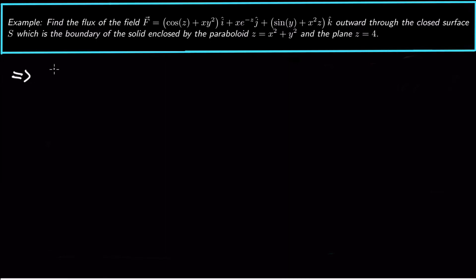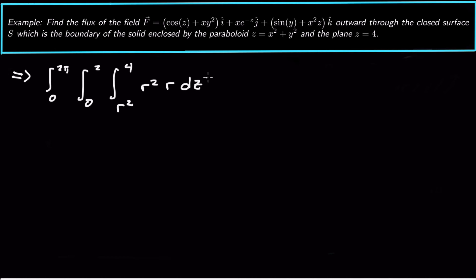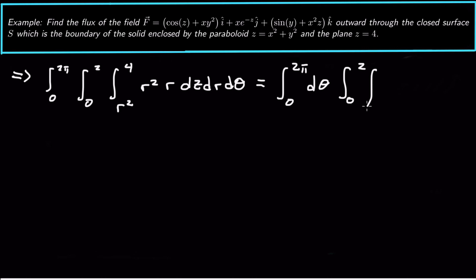So our triple integral becomes the integral from 0 to 2π, integral from 0 to 2, integral from r² to 4, and then x² + y² becomes r², times r, dz dr dθ. We can pull the dθ integral out since there's no θ anywhere, giving us the integral from 0 to 2π dθ, times the integral from 0 to 2, integral from r² to 4, of r³ dz dr.